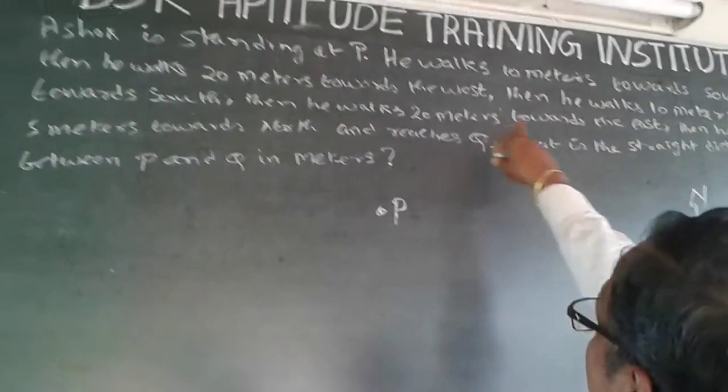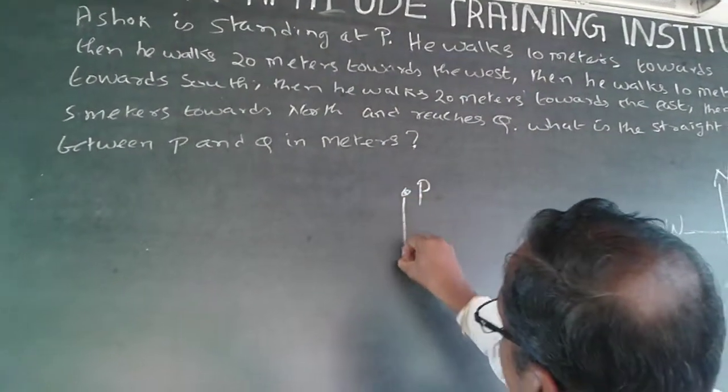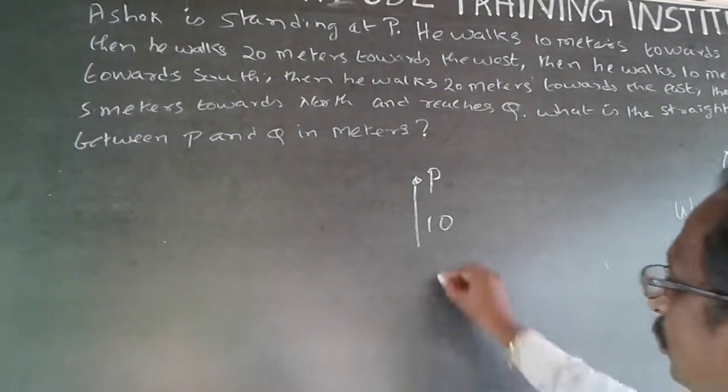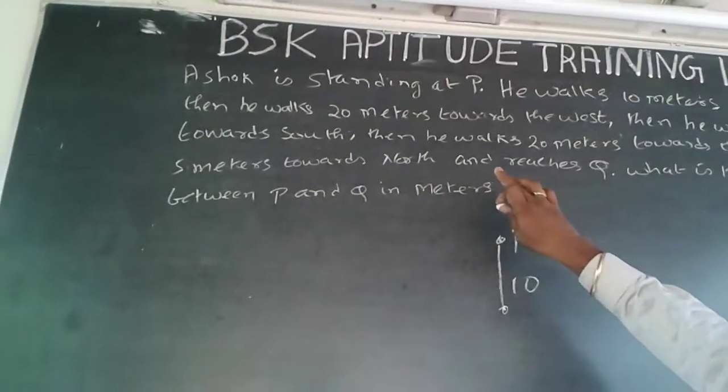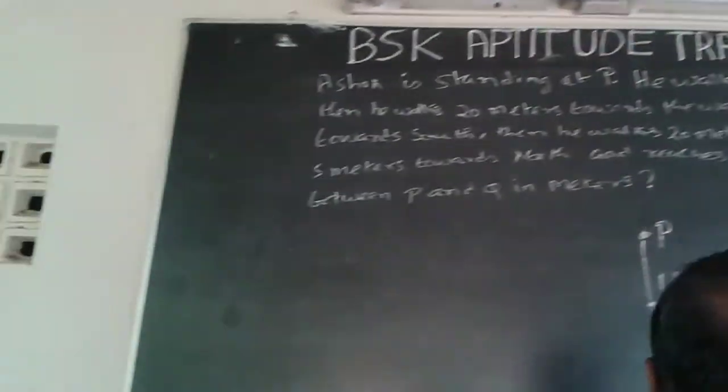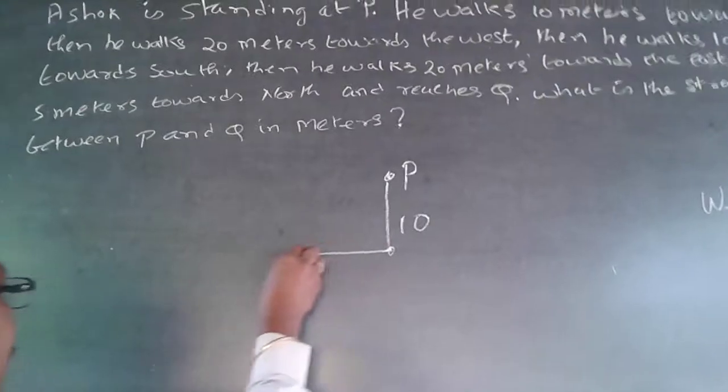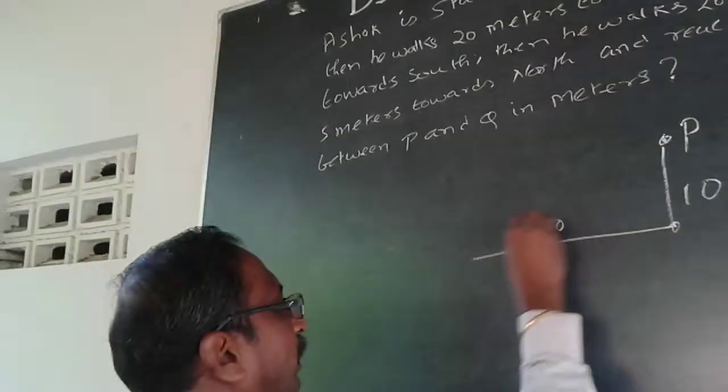So, Ashok is standing here, this is P, he is standing here, this is P, he is walking 10 meters towards south. So, he is coming down, this will be 10. So, he reaches this point, after reaching here, he walks 20 meters towards the west. So, west is towards the left side, so walk 20 meters left. So, he is now here.